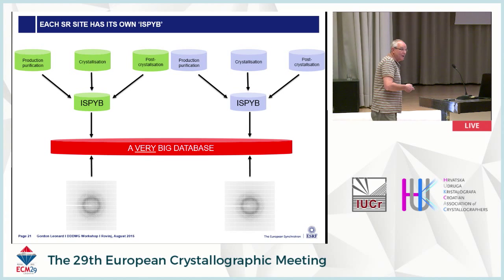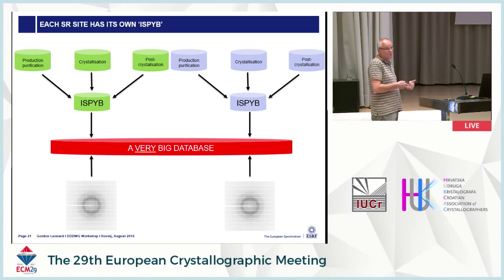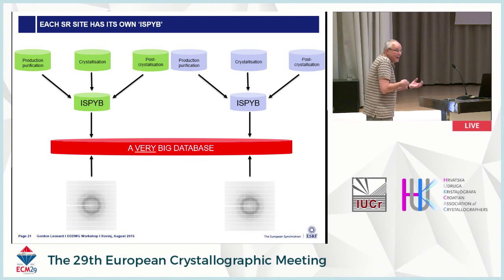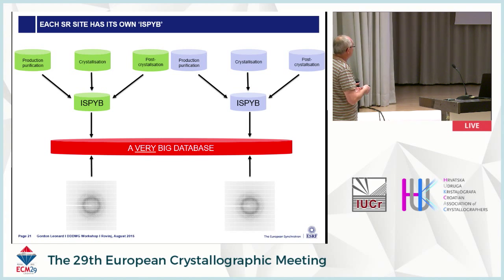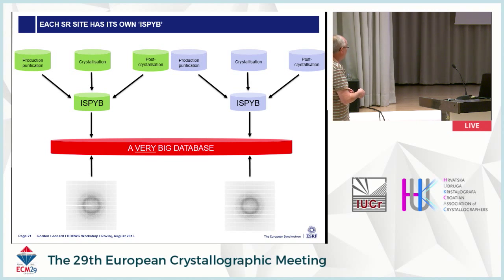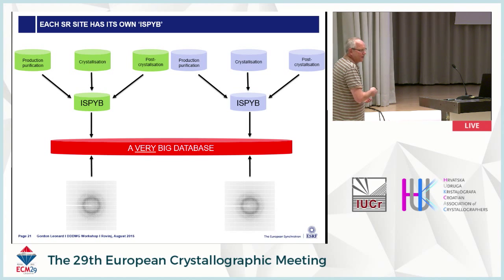A problem with iSpyB, and with most metadata catalogues, is that each synchrotron site has its own iSpyB — Diamond has its own specific database, ESRF's iSpyB database is specific to ESRF, and likewise for Petra3 and Soleil. For non-users, getting information out of these things is near impossible. What needs to be done, in my opinion, is that all the metadata contained in all of these different iSpyBs needs to be put into a really big database — pan-European perhaps — where it can be more easily accessed by non-users. And then of course we have the problem of archiving all the raw images for all experiments either in Europe or in the world.